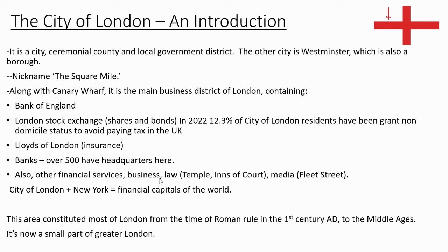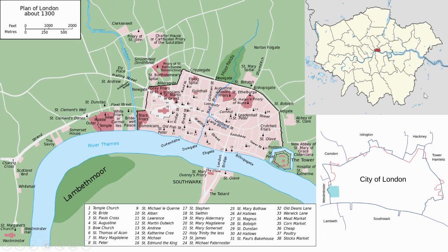The City of London and New York are the two financial capitals of the world. The area of the city was London at the time of Roman rule and had a wall built around it. This was in the first century up until the Middle Ages, but it's now just a very small part of Greater London.